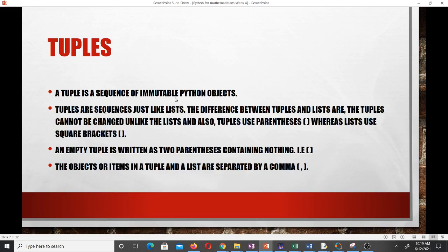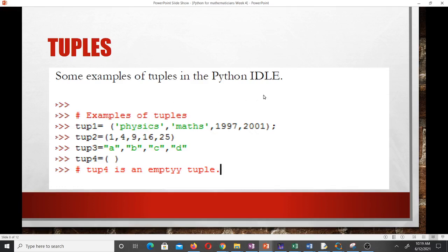Tuples are sequences just like lists. The difference between tuples and lists are that tuples cannot be changed unlike lists, and also tuples use parentheses whilst lists use square brackets. An empty tuple is written as two parentheses containing nothing, and the objects or items in the tuple are separated by a comma. This is an example of tuples. Tuple one, because it's a tuple we are starting with the parenthesis. We have Physics, Math, 1997, 2001. These are all examples of tuples.